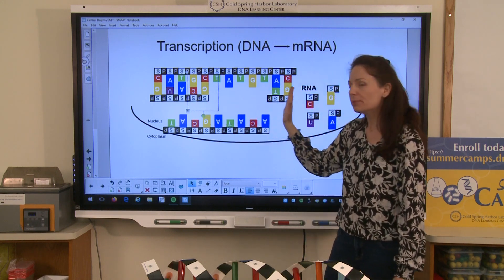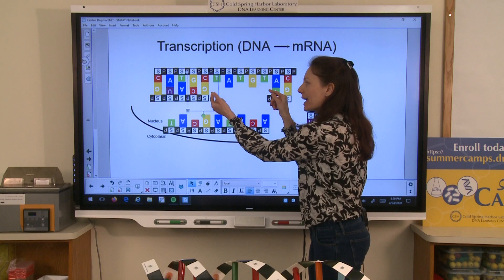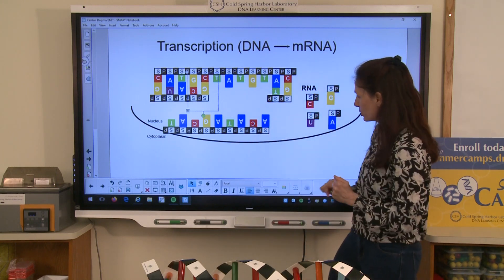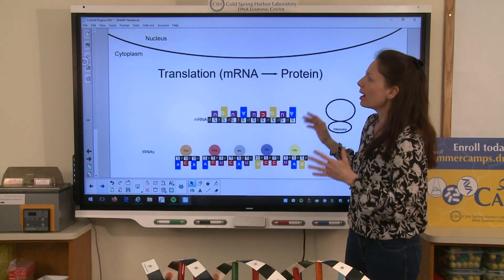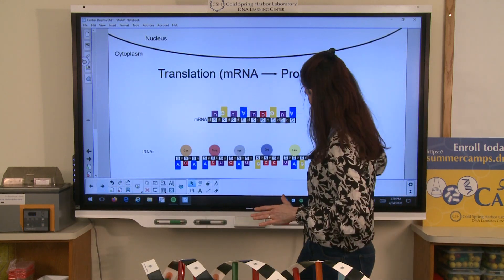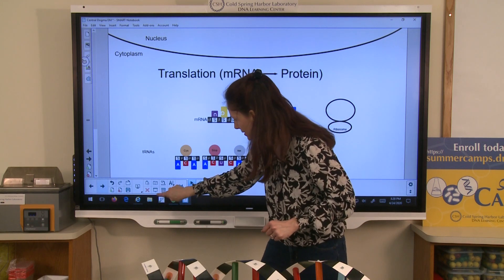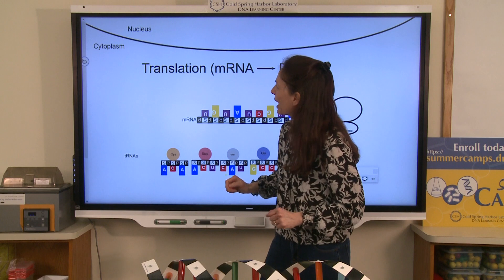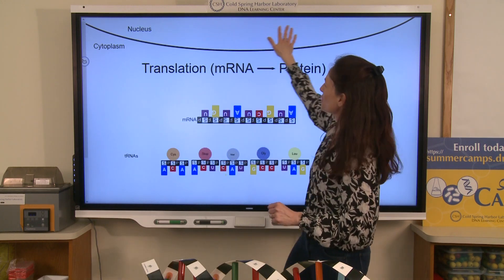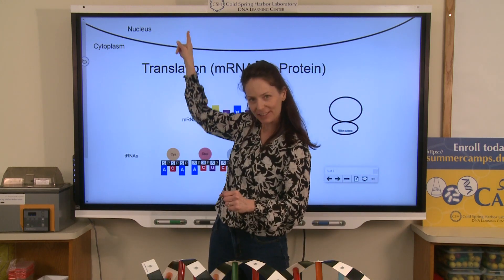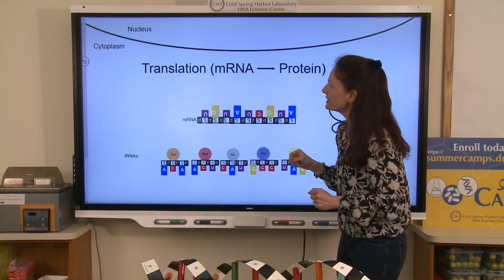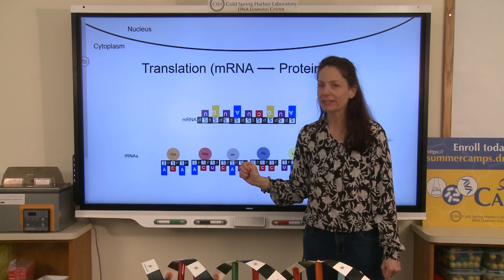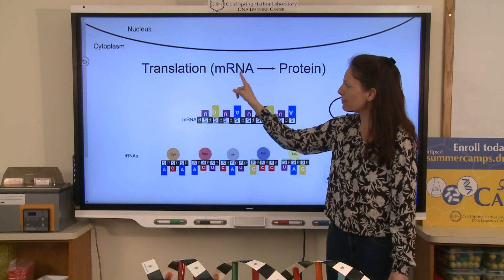Once I've completed that strand, that RNA is not going to stay in the nucleus — it's going to leave the nucleus and come out into the cytoplasm. Here I've got the cytoplasm; the mRNA has come out of the nucleus into the cytoplasm. At this point, I would consider this our translation process. This is where the cell takes the mRNA — the message — and uses it to build the protein.